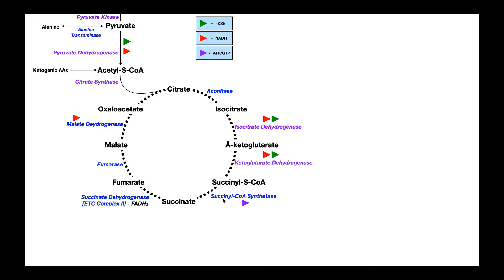Succinyl-CoA synthetase is the next enzyme — it converts succinyl-CoA into succinate. What's really important here is that succinyl-CoA synthetase actually performs substrate-level phosphorylation, meaning we get ATP generation directly through an enzymatic reaction. Technically, this enzyme actually forms GTP. GTP is very similar to ATP, and the GTP can then be immediately converted to ATP. It's important to realize this enzyme does not directly produce ATP — it does produce GTP, which is still considered substrate-level phosphorylation, and for our purposes that GTP is equivalent to an ATP.